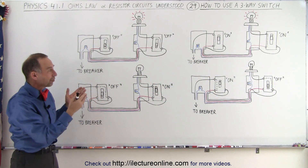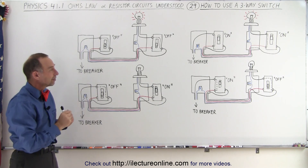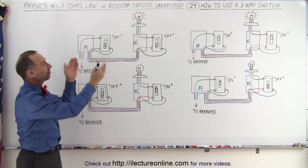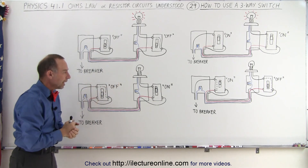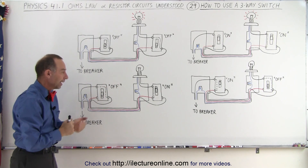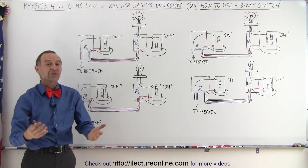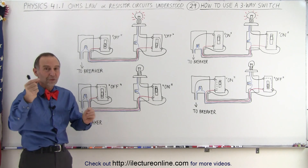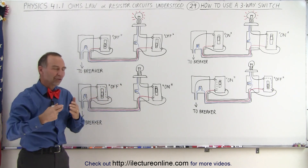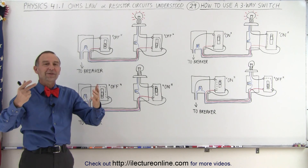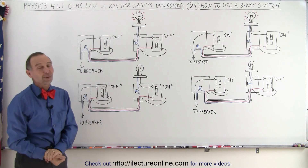So here are the four different ways in which the switch positions can be set to either have the light bulb burning or not. That's how we use three-way switches throughout all kinds of house wiring — to be able to turn the same appliance or the same light bulb on and off from different switches. And that's the way it's wired.